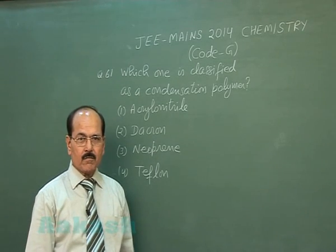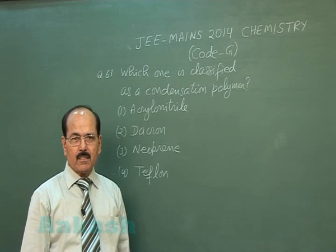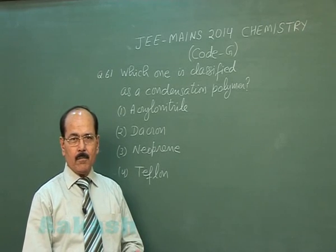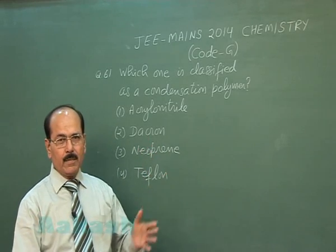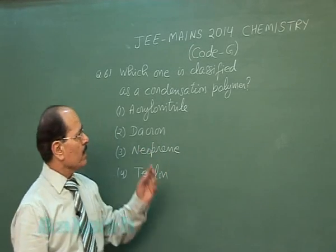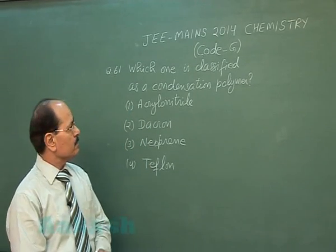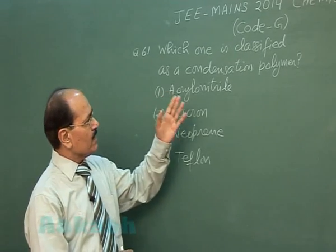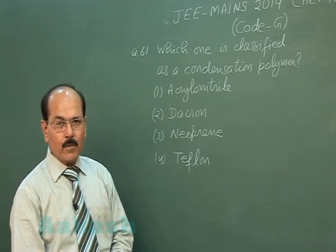Hello students. We will discuss the solution of JEE Main's 2014 paper. Part C, that is chemistry, code G, will be discussed in today's class. The first question of the chemistry part, question number 61, says: which one is classified as a condensation polymer?